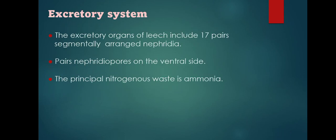The excretory organs of the leech include 17 pairs of segmentally arranged nephridia. The nephridiopores open on the ventral side. The principal nitrogenous waste is ammonia.